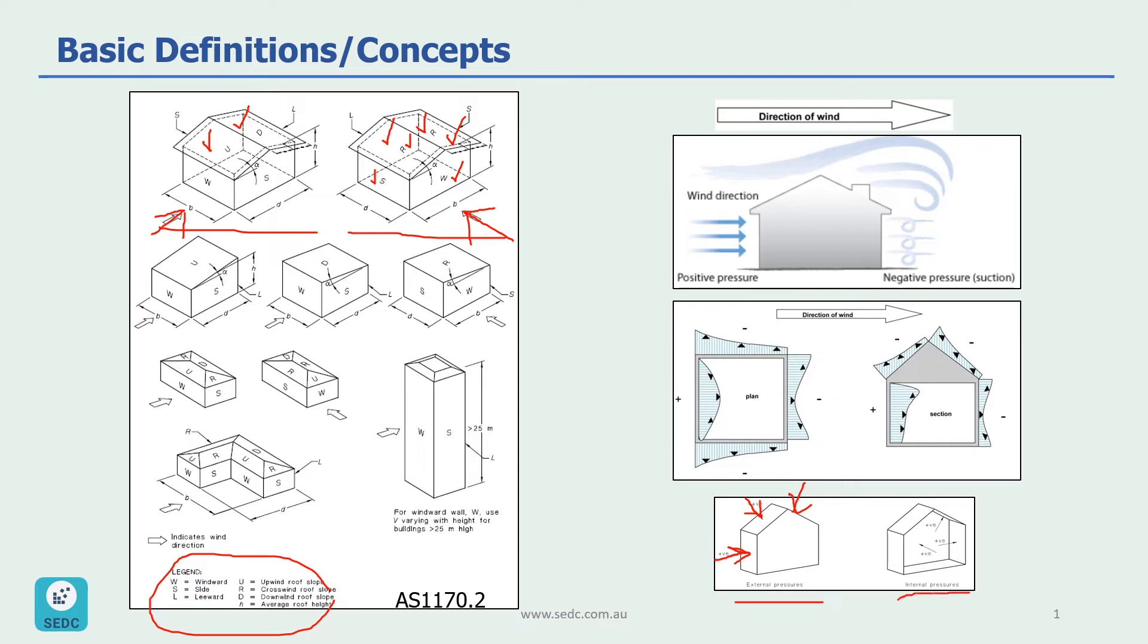For the internal pressure, the concept is the same. Just the wind is blowing from the inside. So for example, from this side, from this side, on the roof, from the rear wall. So all of these are considered as positive pressures.